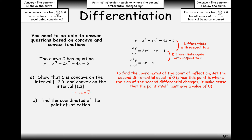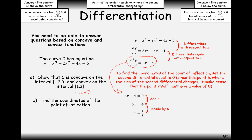Part B: to find the coordinate of the point of inflection, set the second derivative equal to zero — since this is the point where the sign of the second differential changes from negative to positive. Take your second derivative, set it equal to zero, and rearrange to get x = 2/3. To find the full coordinate, plug x = 2/3 into the original equation to get y = 47/27. So the coordinate is (2/3, 47/27).